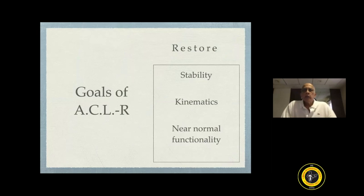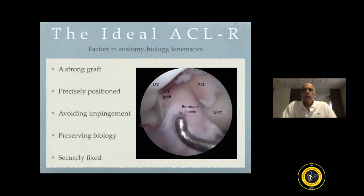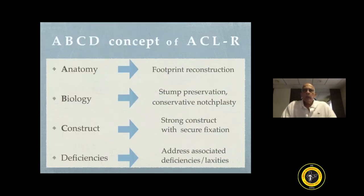The goals of ACL reconstruction are basically to restore stability to the knee, restore the normal kinematics to whatever extent possible, and near normal functionality of the knee. To do that, you need to consider factors like anatomy, biology, and kinematics of the graft that you are putting in. It is basically like an internal bracing of the knee where you want a strong graft which is precisely positioned at the anatomic location. You want to avoid impingement during motion — impingement could occur at the intercondylar notch or between the ACL and PCL. You also want to preserve biology to whatever extent possible, and this graft which has been passed inside the joint should be securely fixed. None of these four basic factors should be short-circuited.